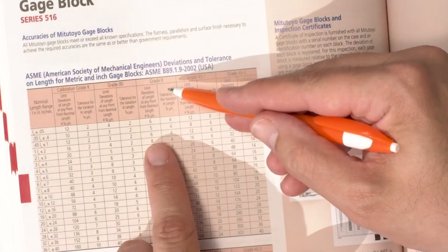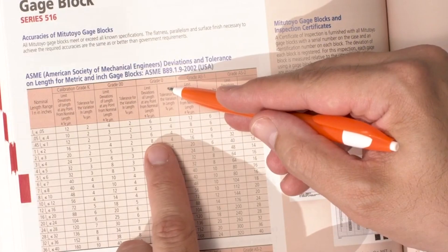Gauge Block grades are defined in national and international standards. In the U.S., we use the American National Standard for Gauge Blocks, ASME B89.1.9. You can also find the tolerance table in the Mitutoyo catalog. All manufacturers of Gauge Blocks sell them in grades in accordance to the standards.